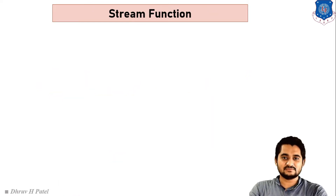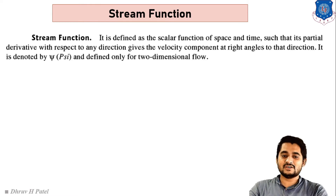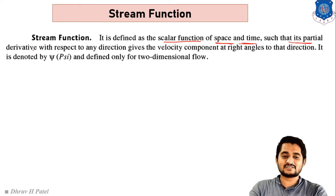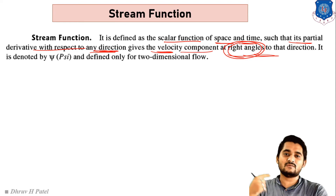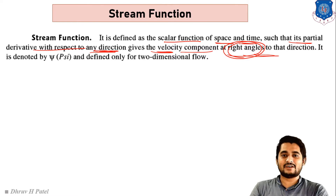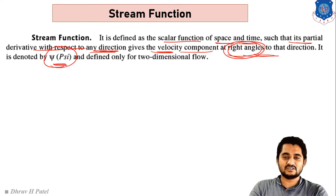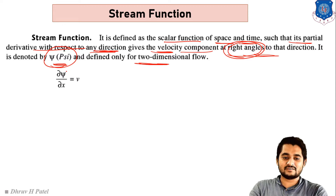Next is stream function. Stream function is defined as the scalar function of space and time such that its partial derivation with respect to any direction gives the velocity component at right angle to that direction. If we derive stream function with respect to x we get velocity in the y direction, and if we derive with respect to y we get velocity in the x direction. Stream function is represented as psi and is only applicable for two-dimensional flow.